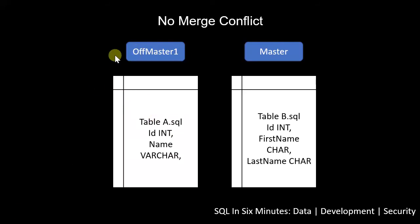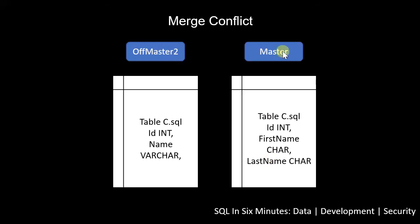To generate a merge conflict with this type of scenario, what we could do is have 'off master 2' and master. On master, we're going to edit the table C SQL file, and we'll do the same with the table C SQL file in off master 2. Notice something: in one branch we have id int and name varchar, and in the other we have id int, first name character, and last name character. Keep in mind, this is the same file. So the problem is when we merge, there's a conflict because these files were both edited.